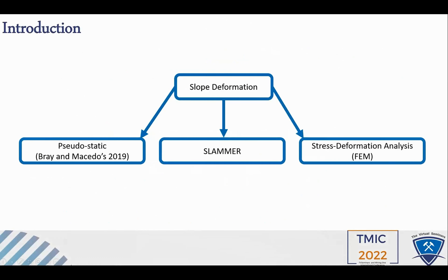In this paper, we used three different methods to estimate the seismic deformation of a slope. First, we used simplified deformation analysis. In this method, we performed static stability analysis using Slide2 software, which uses limit equilibrium to estimate the factor of safety. After that, we conducted pseudostatic seismic analysis in Slide2 as well, to estimate the yield acceleration.